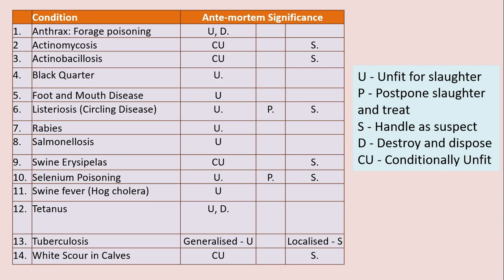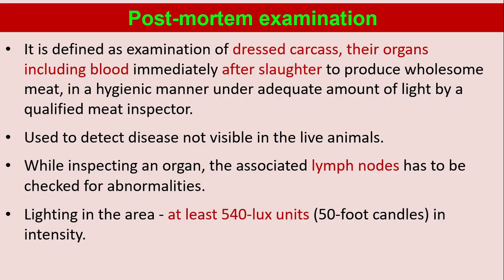This chart shows the condition and ante-mortem significance. On the right side: U represents unfit for slaughter, P represents postpone slaughter and treat, S represents handle as suspect, D represents destroy and dispose, and CU means conditionally unfit.